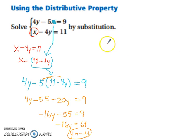So we have x minus 4 times negative 4 equals 11. We took this value and we stuck it in for y.